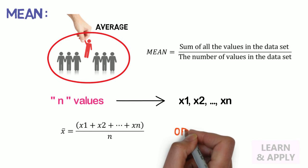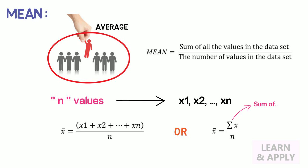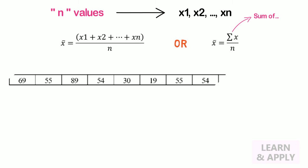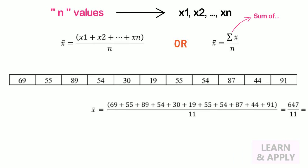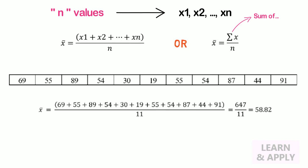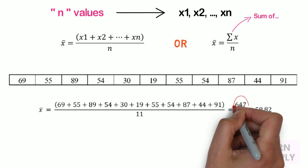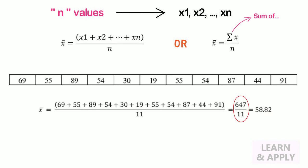This formula is usually written in slightly different manner using a Greek capital letter pronounced as sigma which means sum of x bar which is equal to sigma xi divided by n. Let's calculate the mean in this example. x bar is equal to sum of all the values in the data set divided by the number of values in the data set which is equal to x bar is equal to 647 divided by 11 which is equal to 58.82.